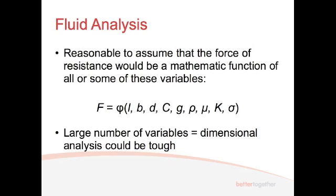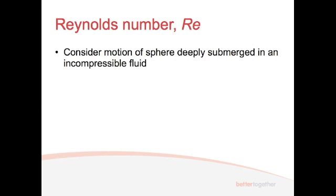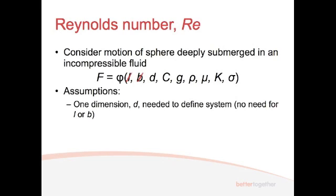Doing dimensional analysis with such a large number of variables is actually quite tough. But if we choose a specific case, we can neglect some of these variables. And so the specific case we've chosen is essentially where you've got a sphere that's been deeply submerged in an incompressible fluid, and we're looking at the resistance on the fluid provided by that sphere. Here's our general equation with all our variables, but what can we neglect? Well, we can make some assumptions that help us cancel out some of these things. With the sphere, there's only one dimension, yeah, the diameter. And so we can disregard the length and the breadth. We don't need to worry about those two things, so we can cross those out.